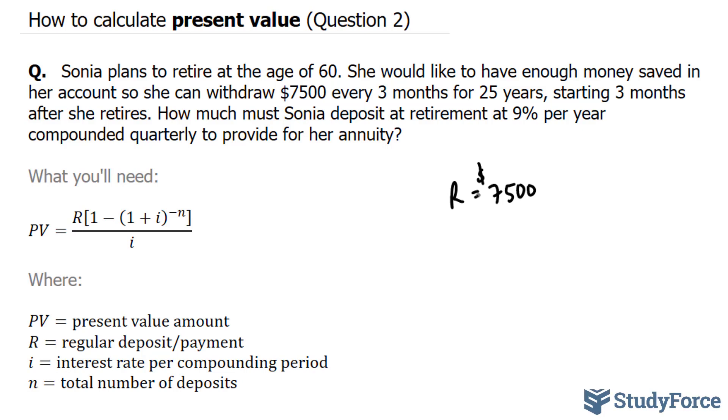Which means that for N, which represents the total number of deposits, it will be 25 years times 4. Notice that it says it is compounded quarterly, meaning every 3 months, and that happens 4 times in a year.